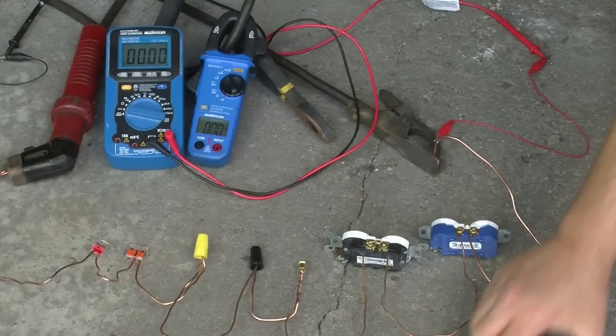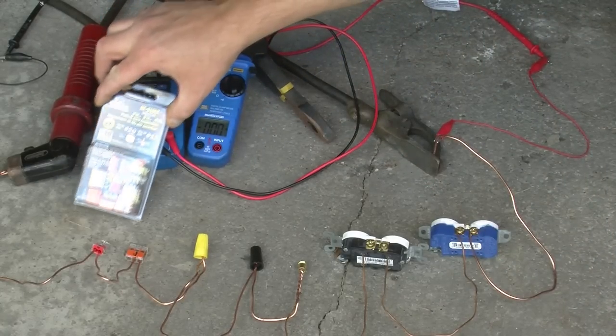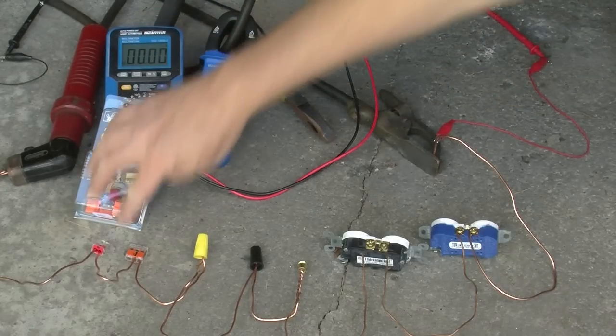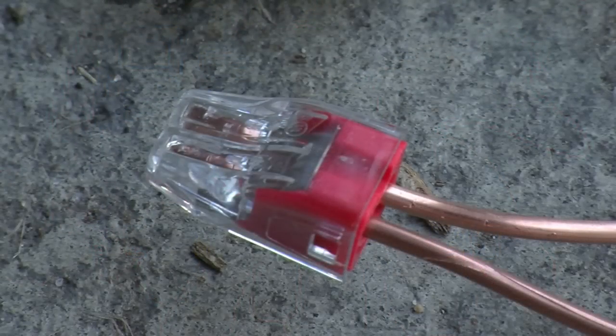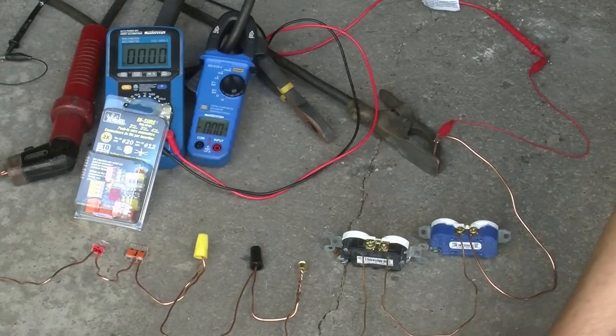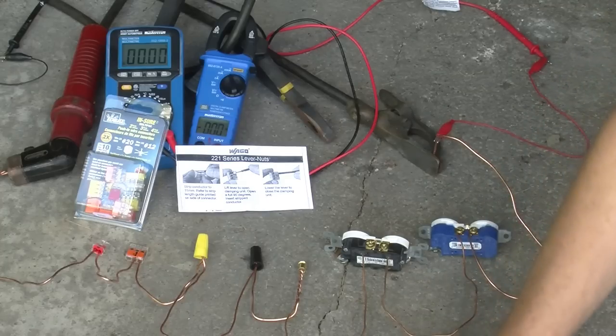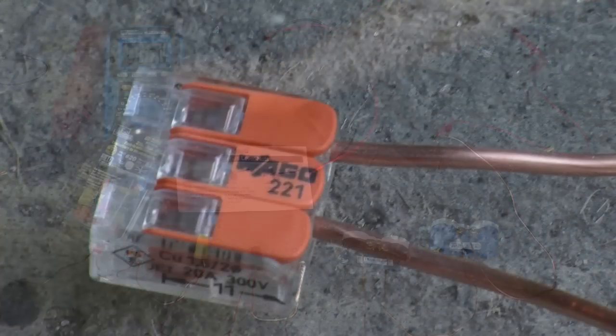Let me point out each connection. Over here we have one of these Ideal Insure press-in connectors, where you can just press the wire into the connector. Next to it, we have a Wago connector of this type.